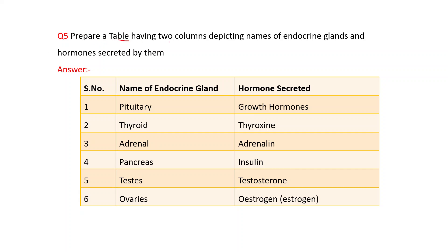Question 5: Prepare a table having two columns depicting names of endocrine glands and hormones secreted by them. Write the answer in this way — name of endocrine gland and hormone secreted: Pituitary – growth hormones; Thyroid – thyroxine; Adrenal – adrenaline; Pancreas – insulin; Testes – testosterone; Ovaries – estrogen. Note: the spelling of estrogen may start from O or E, both spellings are correct.